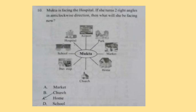Question 10: Mukta is facing the hospital. If she turns two right angles in the anti-clockwise direction, then what will she be facing now? Mukta is facing the hospital. If she takes 90 degrees anti-clockwise she will be facing the bus stop, and again 90 degrees anti-clockwise she will be facing home. So turning two right angles in the anti-clockwise direction, she will be facing home. Option C is the correct answer.